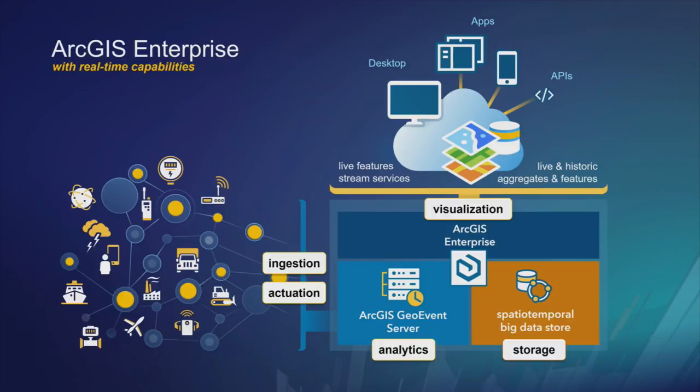We can also send to a visualization medium — a feature service or stream service — so you can see your data on a map. And we can send actuation commands to devices or nodes on an Internet of Things network, or email and text messages. Getting data in, analyzing it, and sending out new streams of data are the three pillars — the three legs of the real-time stool.